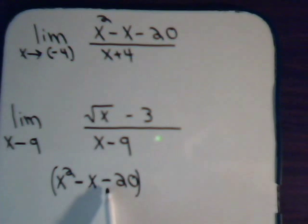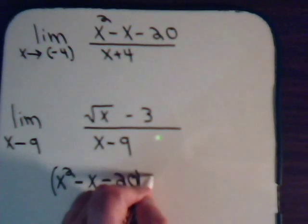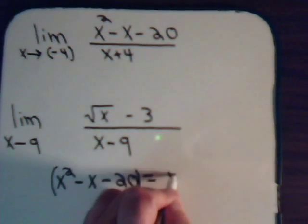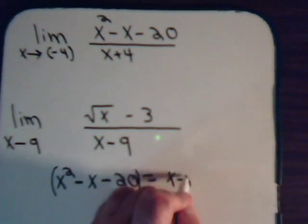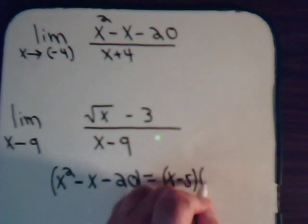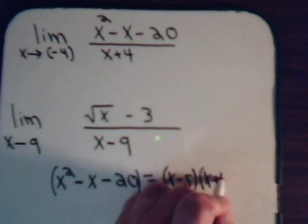We want minus 20. If we had plus 5 and minus 4, that would give minus 20 when you multiply them together. But plus 5 and minus 4, that would be plus 1. So let's try it with x minus 5 and x plus 4.